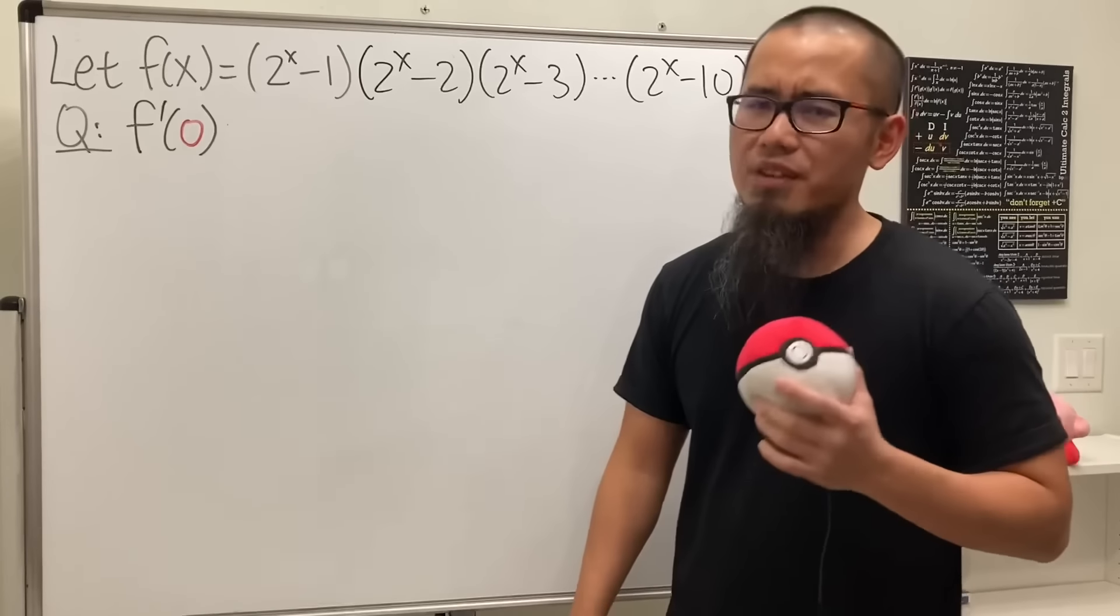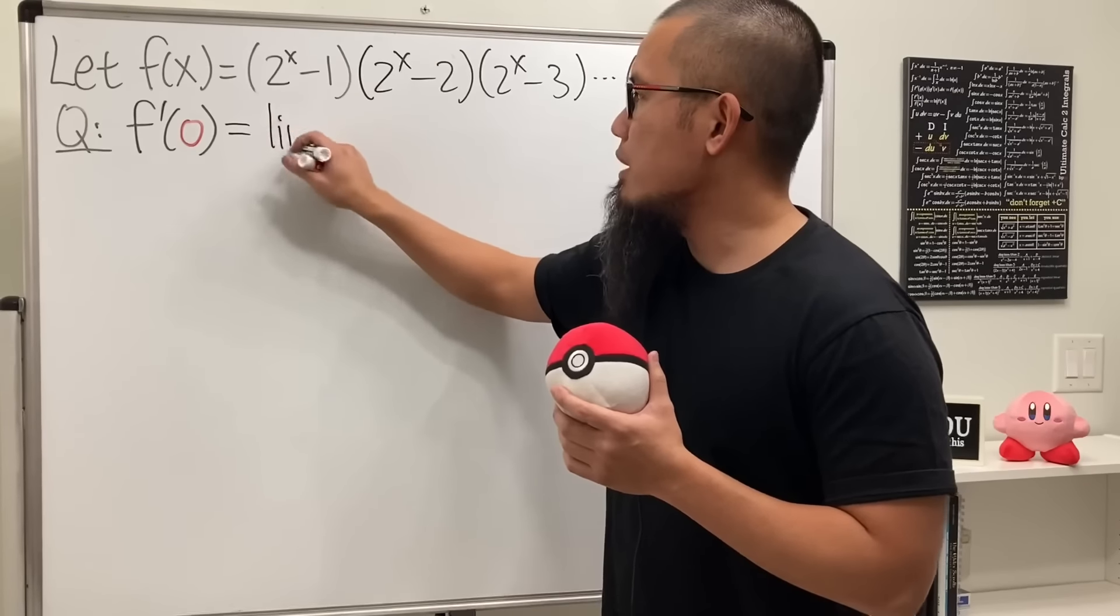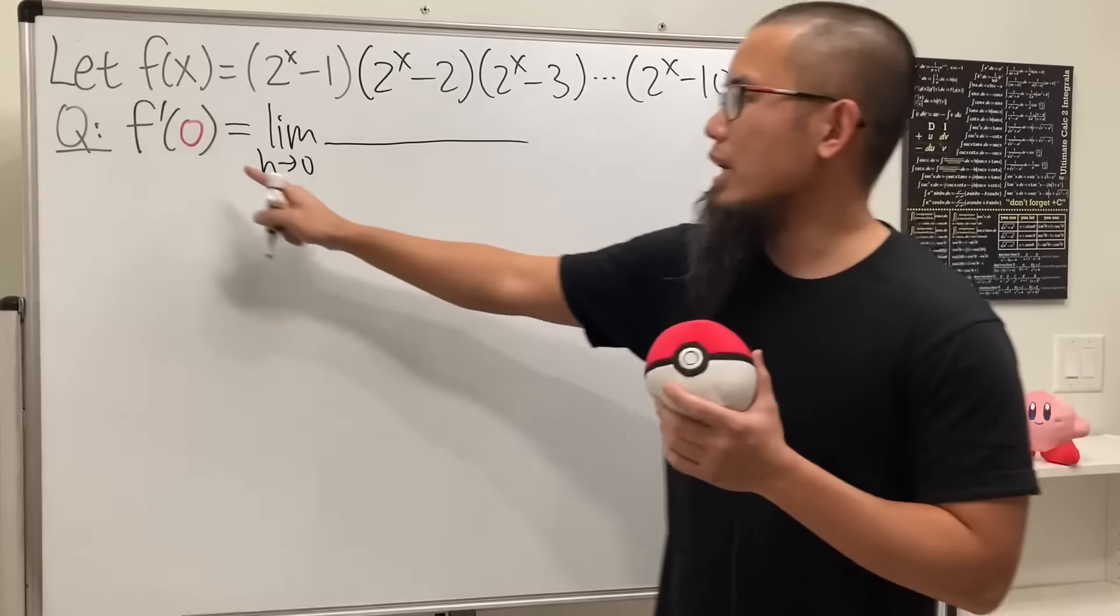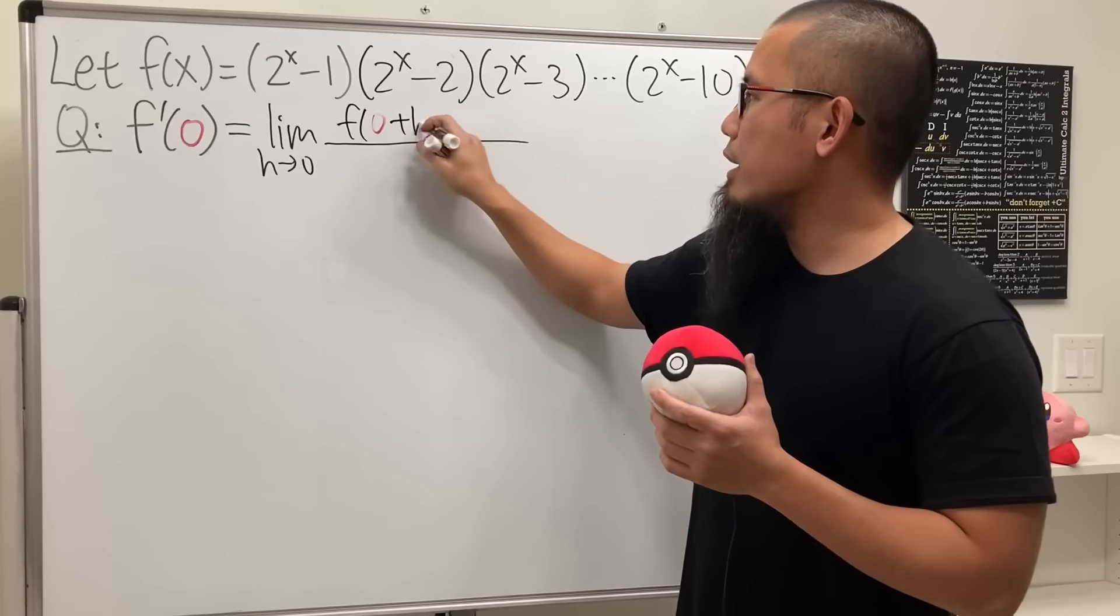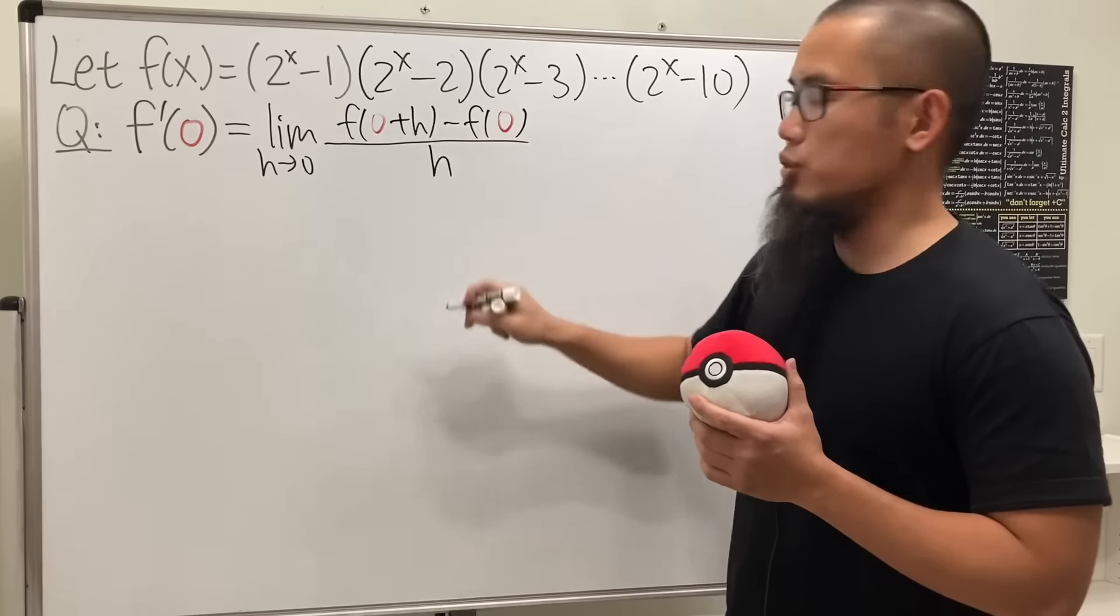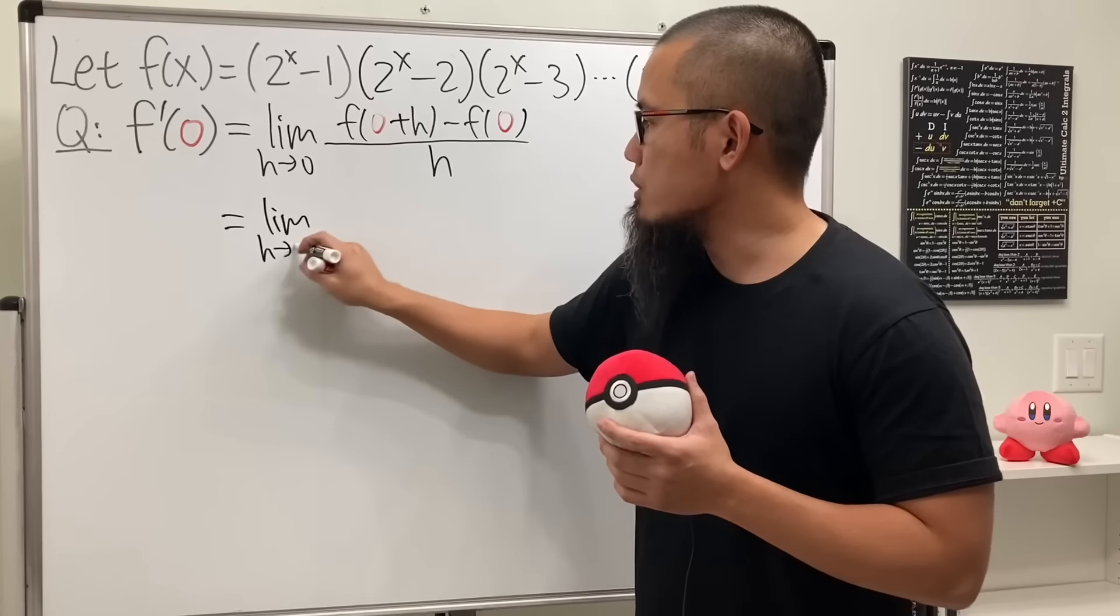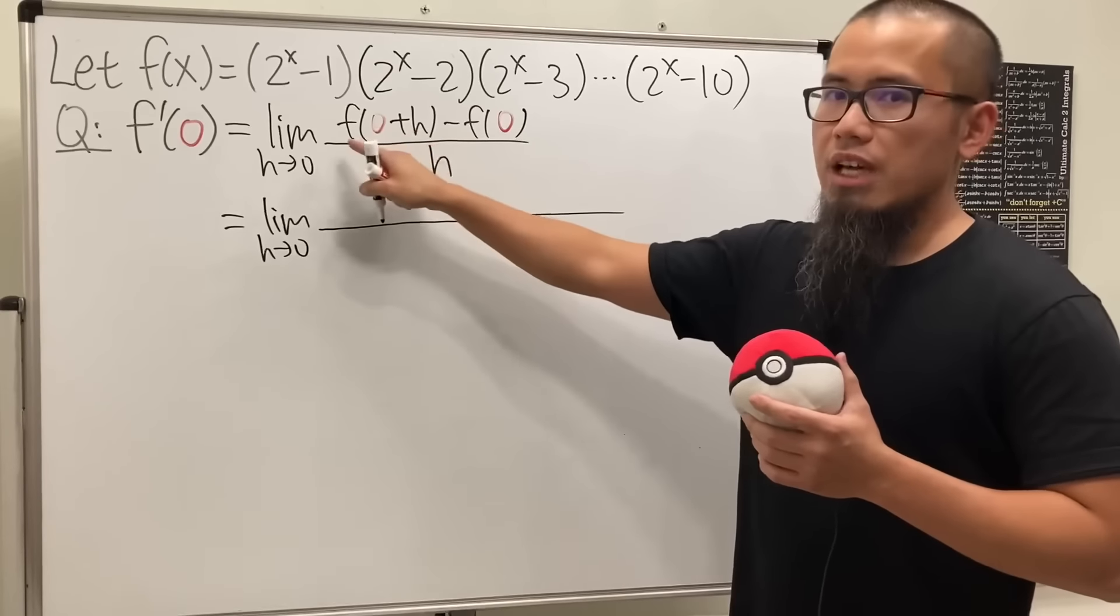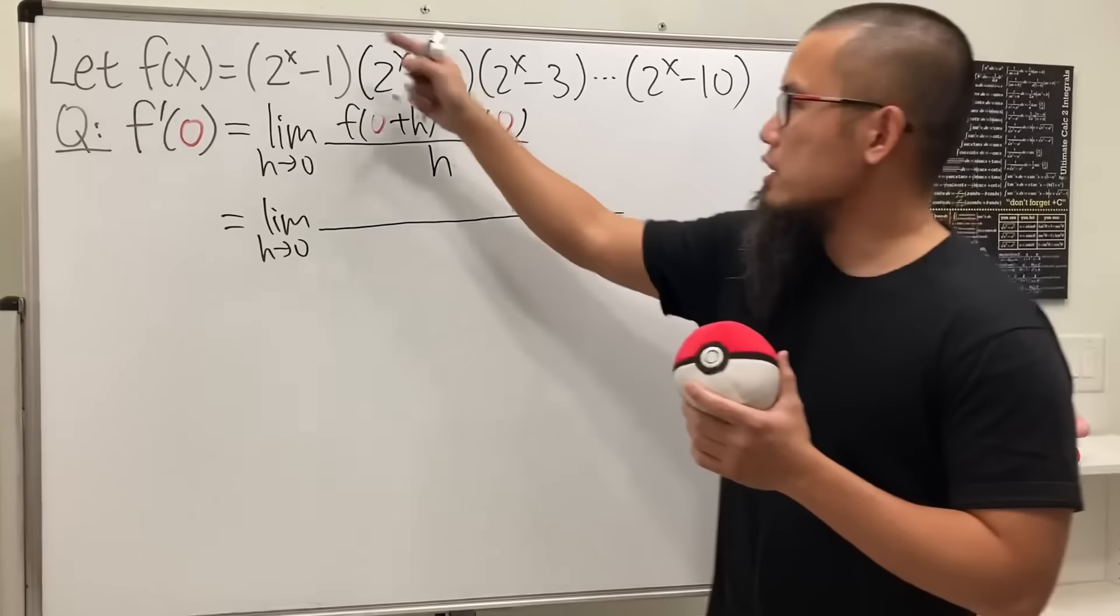Check this out. By definition we know this will be the limit as h approaching zero, and because we have the x value equal to zero, this is just f(0+h) - f(0) all divided by h. This is the limit as h approaching zero. This right here is just f(h), meaning we can put h into all the x's, that's all.